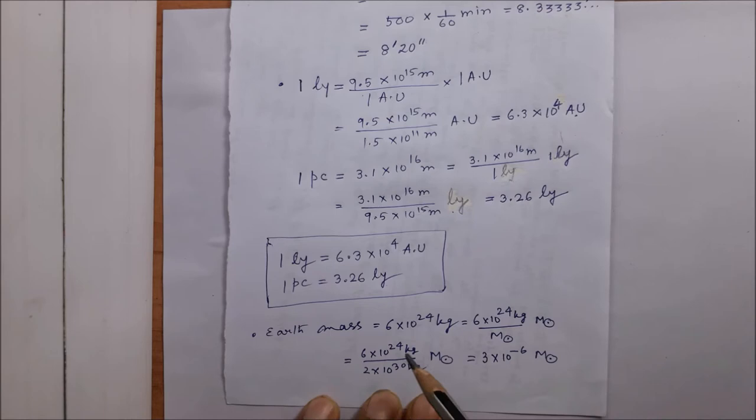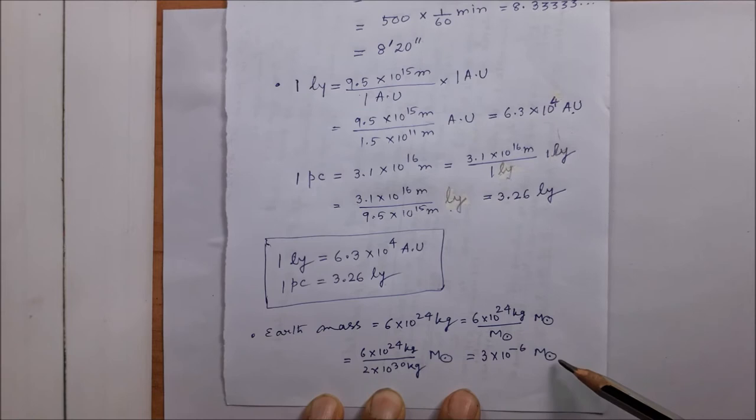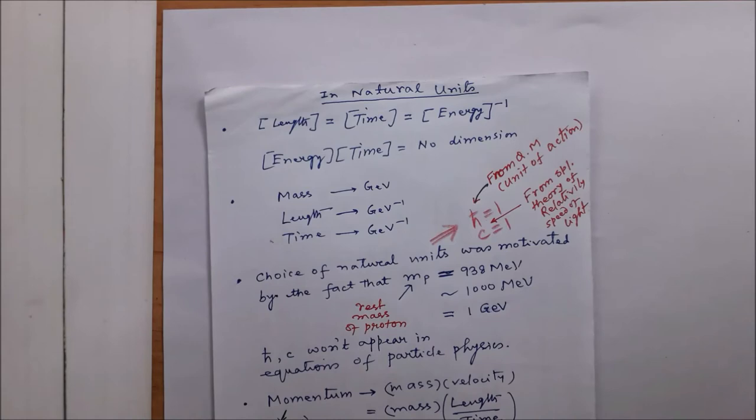Earth mass, something we use, is 6 times 10 to the power 24 kg and it is related to the solar mass through this relation: 3 times 10 to the power minus 6 solar masses equals one Earth mass.